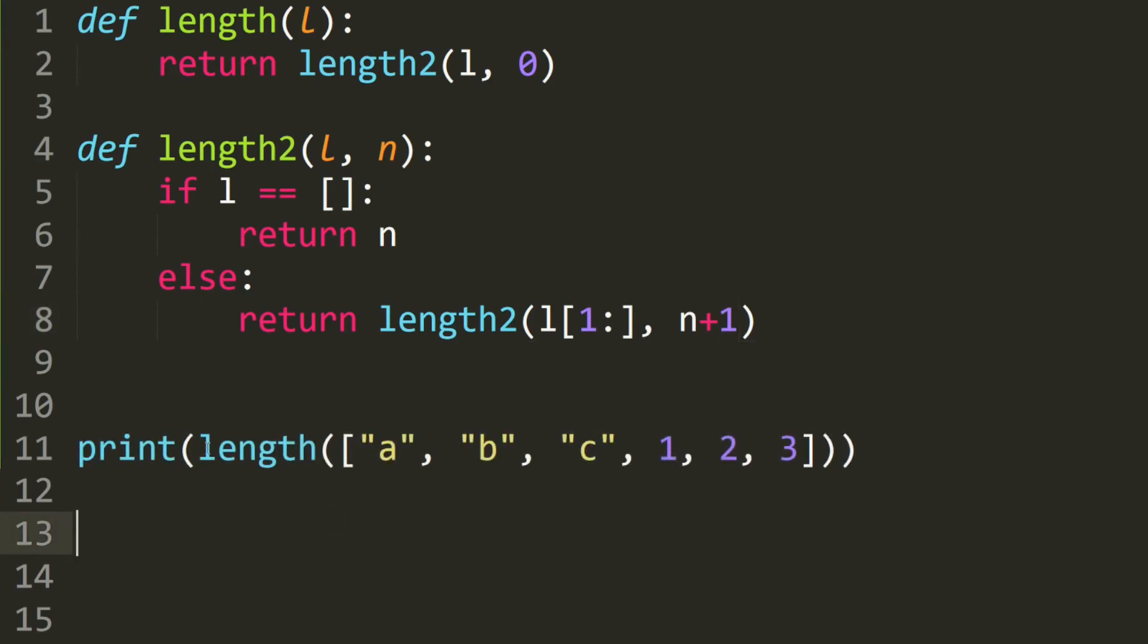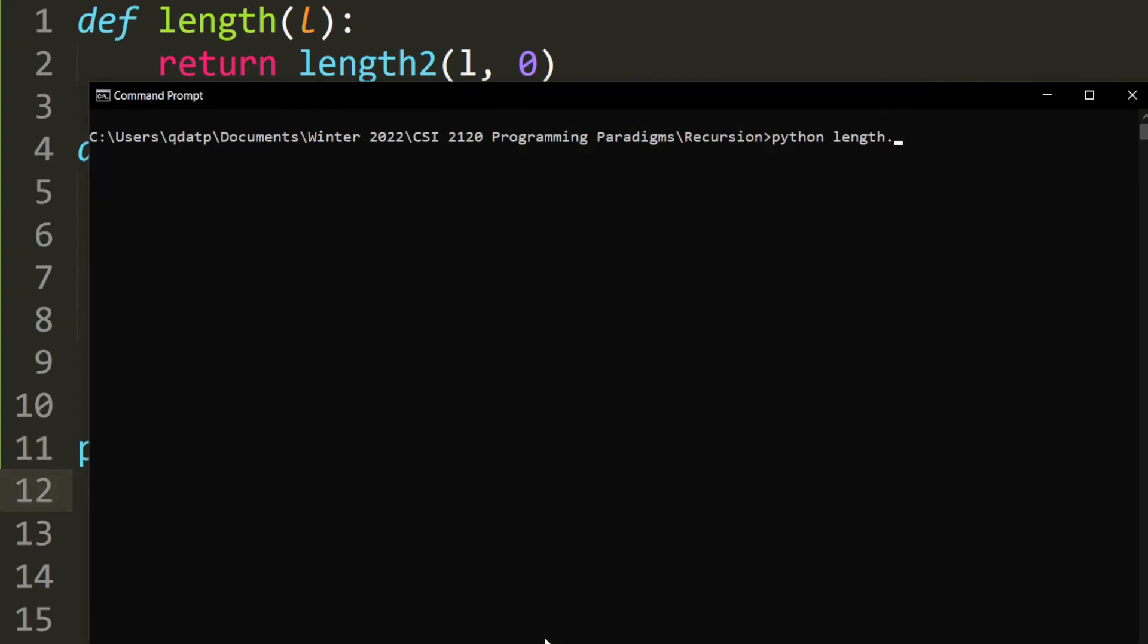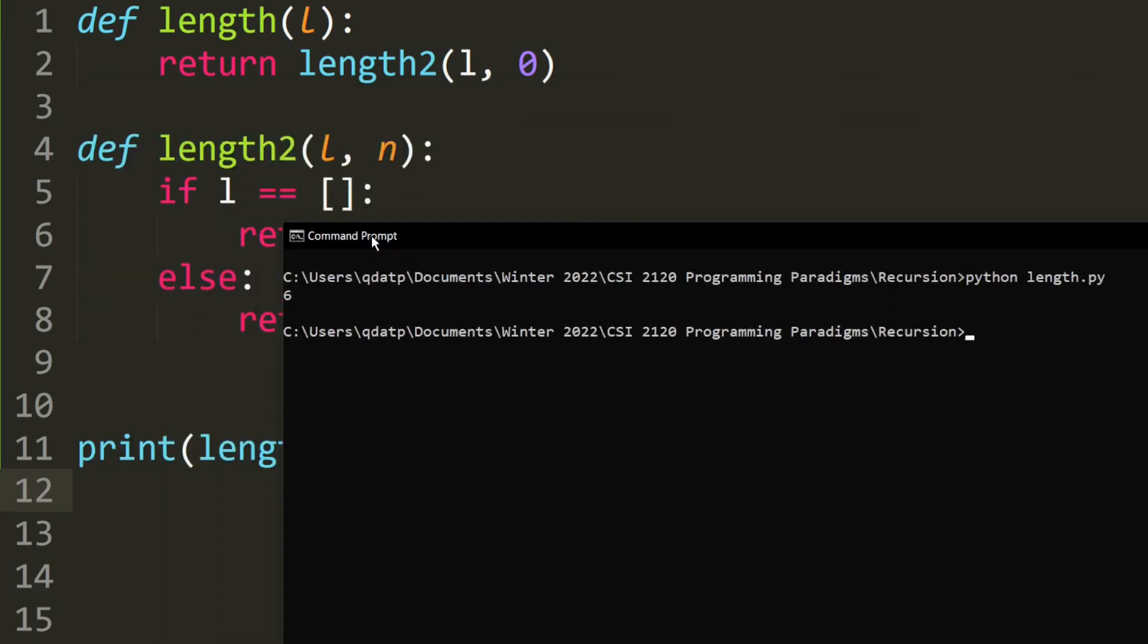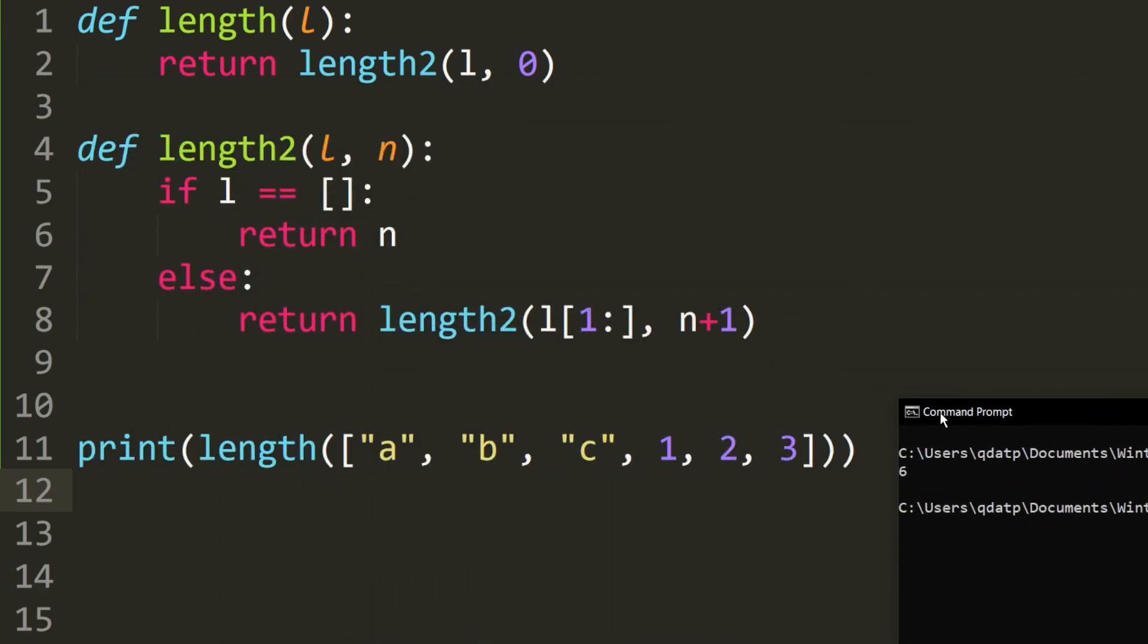Let's go ahead and test it. So we want to find the length of this list, which has 6 elements. So as you can see, it prints out 6, which means that our code is correct.